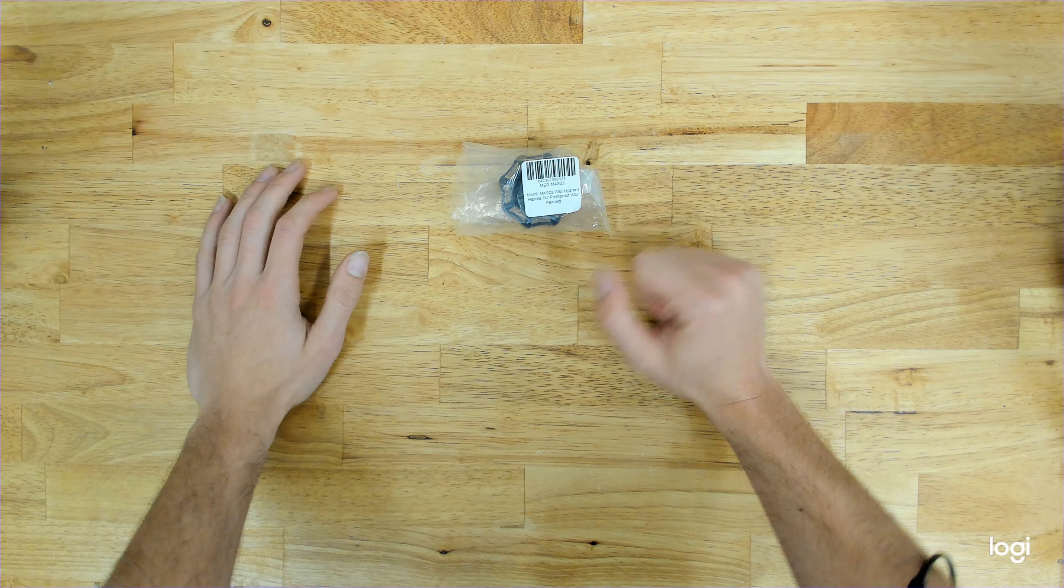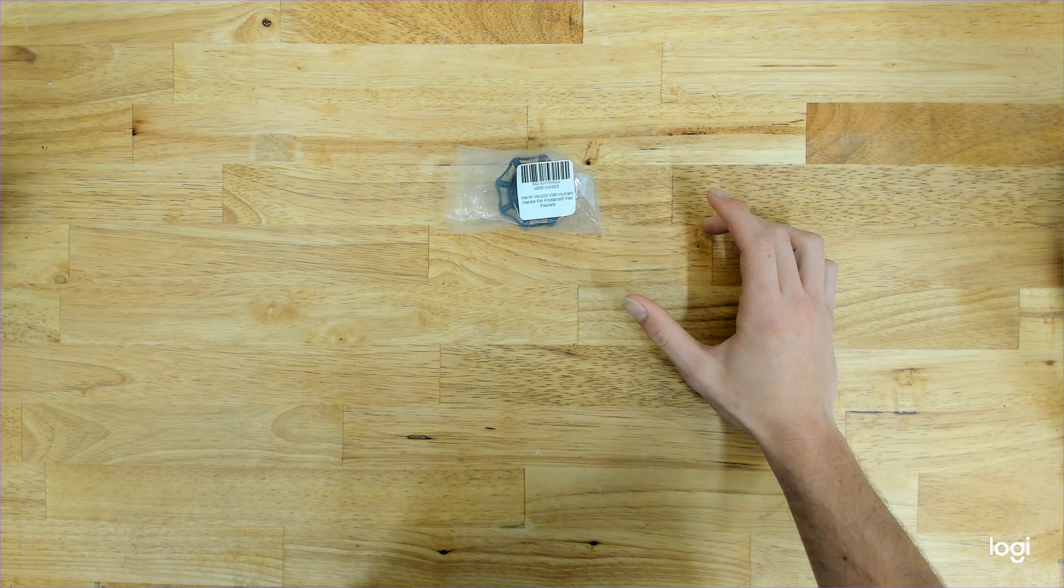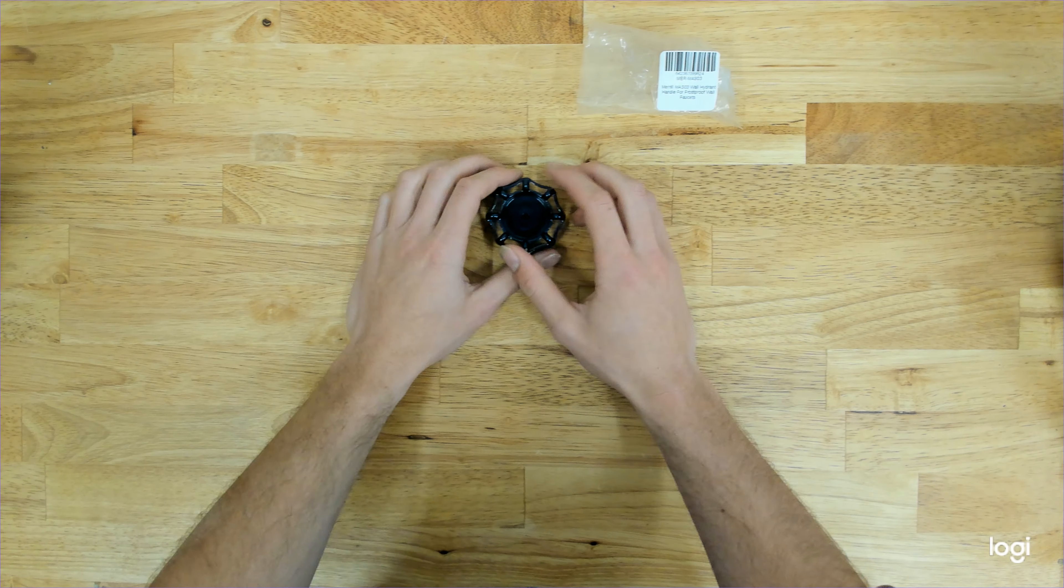This is the Merrill MAS-03 metal handle for the MF and MA series Merrill faucets. We can go ahead and get it out of the bag here, and it is a metal handle.